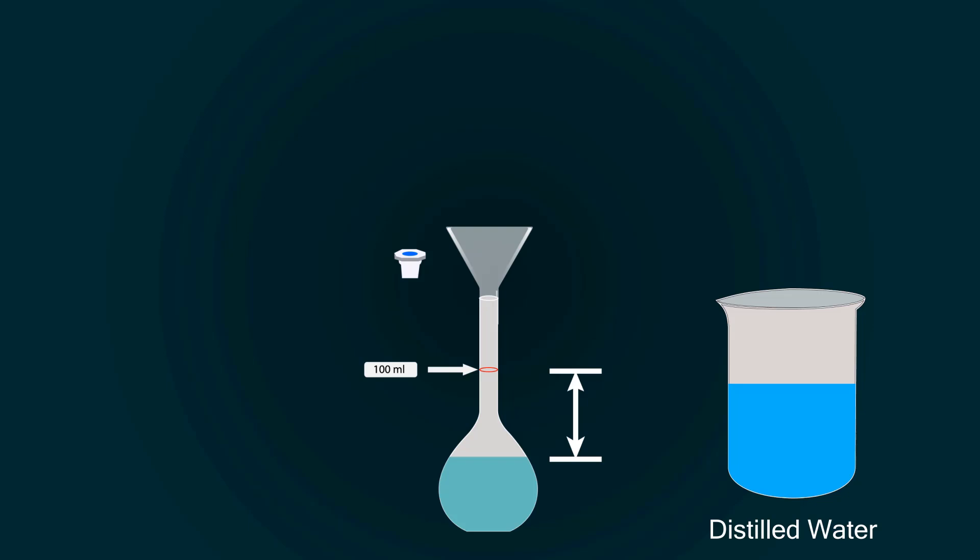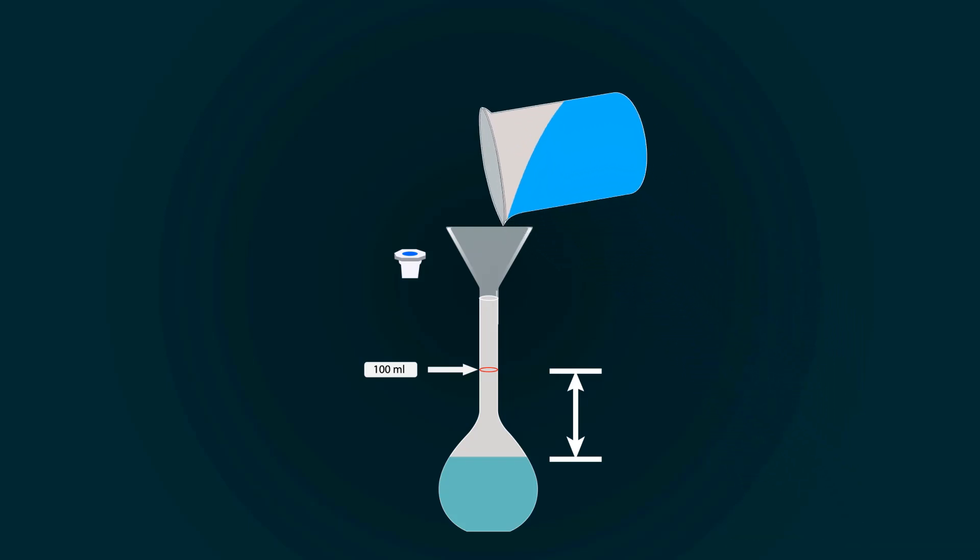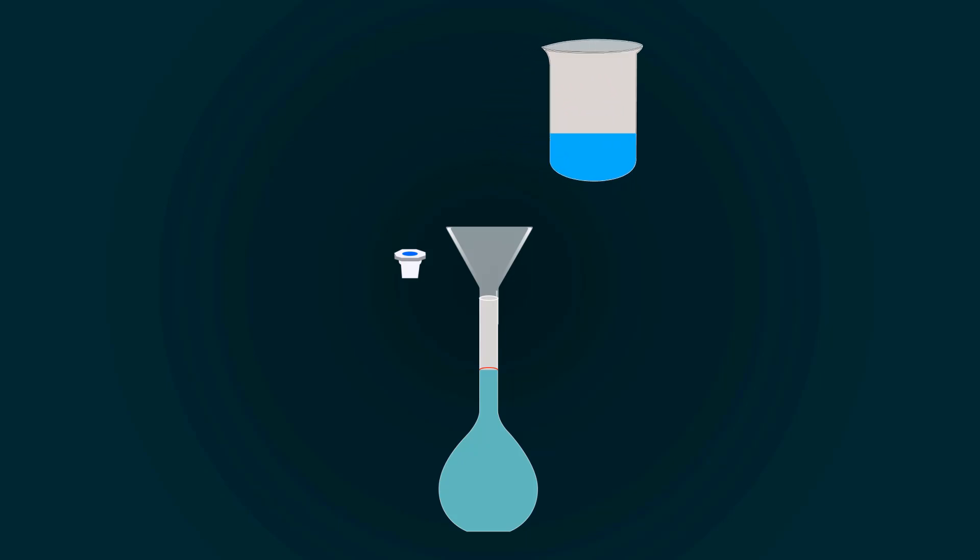So, take more distilled water into an empty beaker and start pouring it into the volumetric flask.